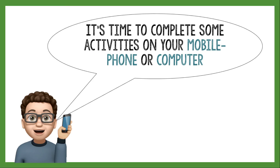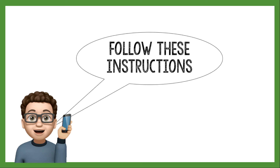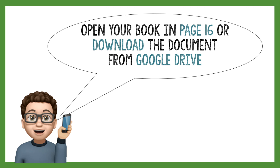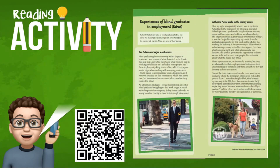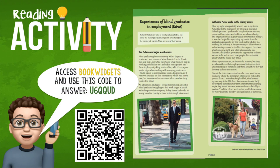It's time to complete some activities on your mobile phone or computer. Follow these instructions. Open your book on page 16 or download the document from Google Drive. Reading activity: you're going to access Book Widgets and use the code to answer. I'm going to leave you the link in the description, so you just click and go straight to the activity. Or, if you wish, you can scan the QR code.